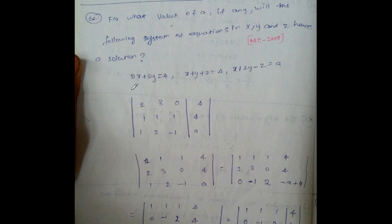For what value of 'a', if any, will the following system of equations in x, y, z have a solution? 2x plus 3y equal to 4, x plus y plus z equal to 4, x plus 2y minus z equal to a. Set the augmented matrix: [2, 3, 0 | 4], [1, 1, 1 | 4], [1, 2, -1 | a].